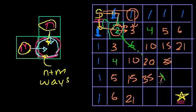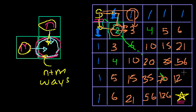21. Let's see, this is 35, 35, 70. 35 plus 21 is 56. 35 plus 21 is 56. 56 plus 70 is 126.